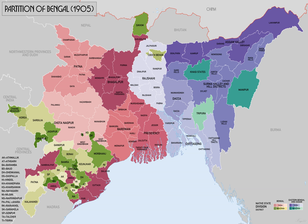The decision to effect the partition of Bengal was announced on 19 July 1905 by the Viceroy of India, Lord Curzon. The partition took place on 16 October 1905 and separated the largely Muslim eastern areas from the largely Hindu western areas. The Hindus of West Bengal who dominated Bengal's business and rural life complained that the division would make them a minority in a province that would incorporate the province of Bihar and Orissa. Hindus were outraged at what they recognized as a 'divide and rule' policy, where the colonizers turned the native population against itself in order to rule, even though Curzon stressed it would produce administrative efficiency.